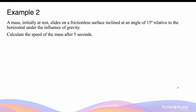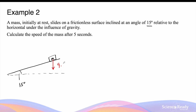A mass initially at rest slides on a frictionless surface inclined at an angle of 15 degrees relative to the horizontal, under the influence of gravity. Calculate the speed of the mass after 5 seconds. We have an incline at an angle of roughly 15 degrees to the horizontal. The mass accelerates downward at 9.8 meters per second squared due to the influence of gravity. Due to the incline, the mass will start to move down the incline.